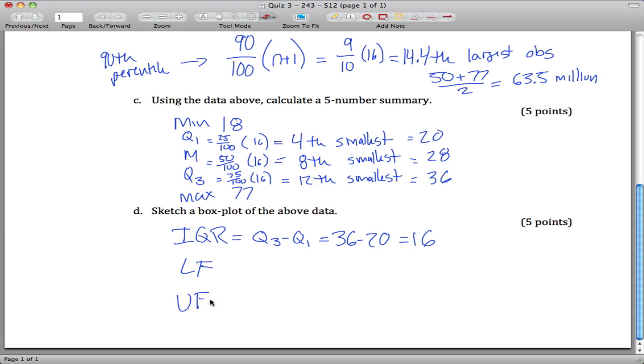Then we need to set up our lower fence and upper fence to see if we have any outliers. Our lower fence is Q1 minus 1.5 times the interquartile range, which is 20 minus 1.5 times 16, which is negative 4. Our upper fence is Q3 plus 1.5 times the interquartile range, which is 36 plus 1.5 sixteens, which is 60.